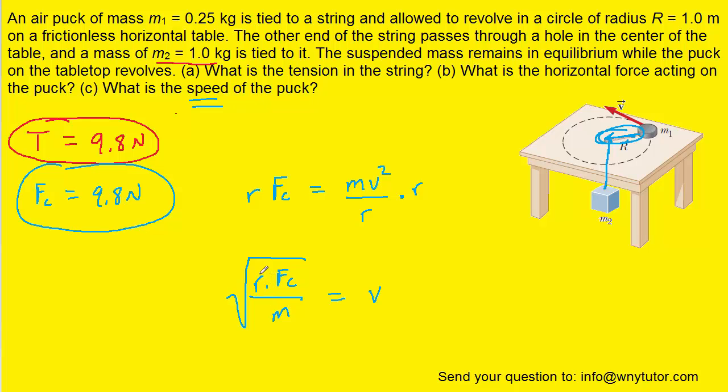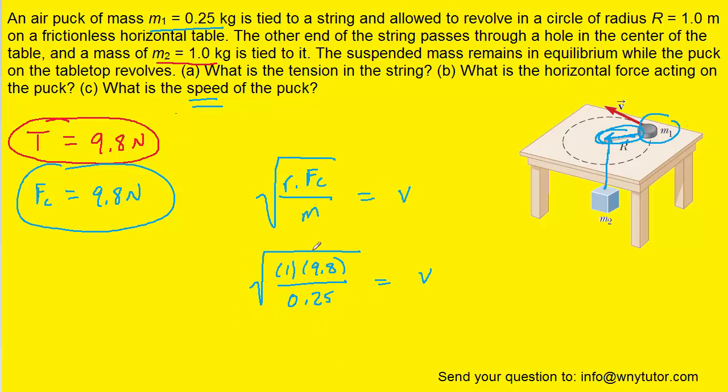We can now plug in the known value of the radius, the centripetal force which we said was 9.8 Newtons, and the mass will be the mass of the puck, labeled M1. When we simplify that, we get a speed of approximately 6.3 meters per second. This is the correct answer to part C.